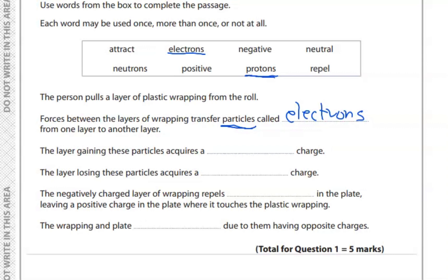The layer gaining these particles acquires a certain charge. When an atom gains an electron it acquires a negative charge, and when an atom loses an electron it acquires a positive charge — like a cation and anion, which we have studied.